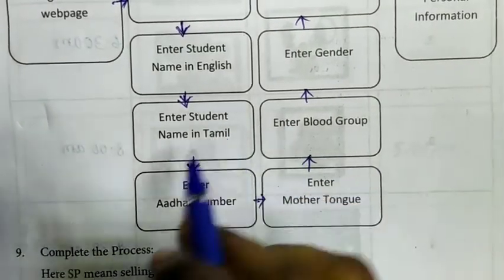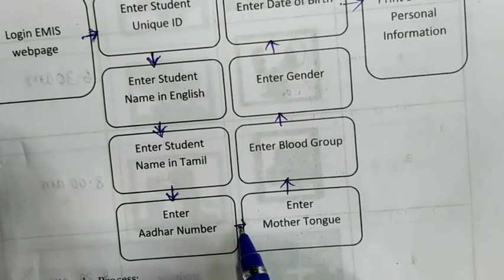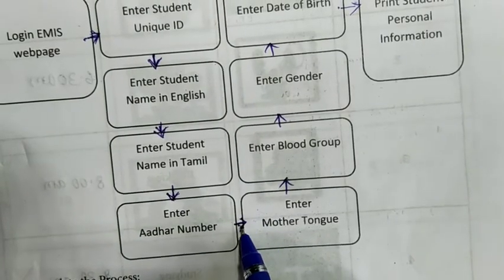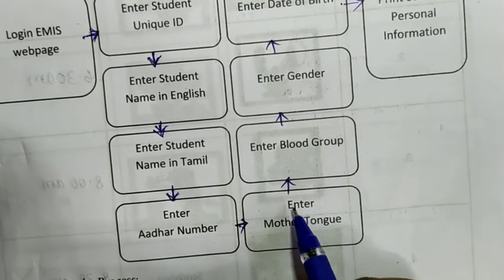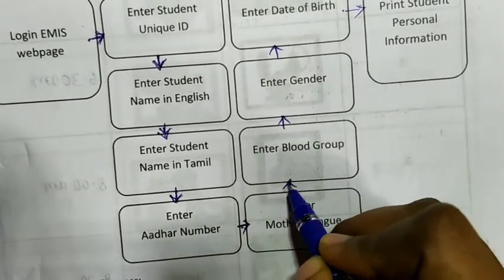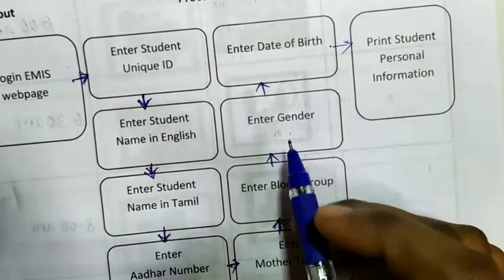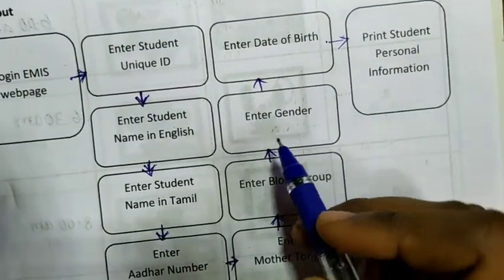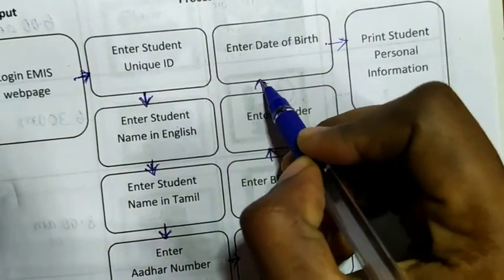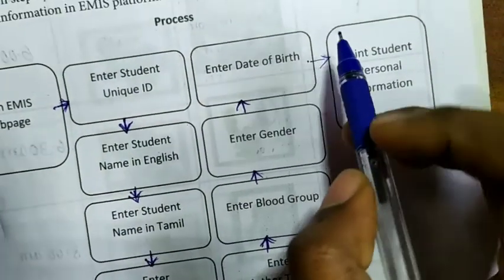Then next, flowline, enter mother tongue, then enter blood group, then flowline, enter gender, then flowline, enter date of birth and enter flowline.